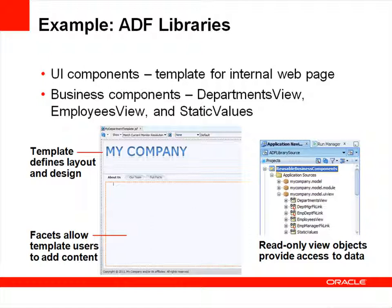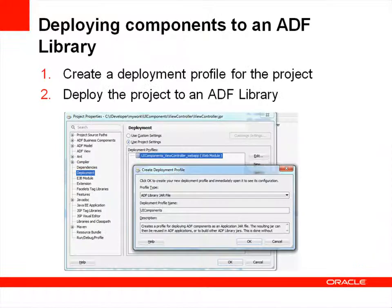The UI components library contains a page template that will be used by each department in a company to create an internal web page for the department. The template defines the look and feel of the page and includes areas known as facets where page designers can add content. The business components library includes read-only view objects for querying the departments and employees tables, plus a view object based on a static list of values — in this case, a list of languages.